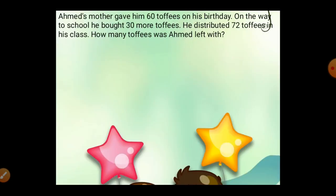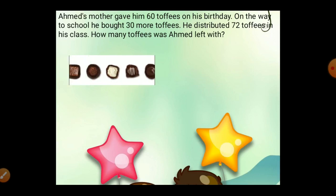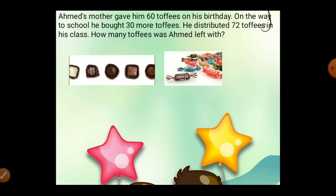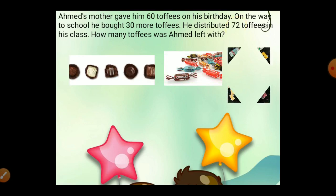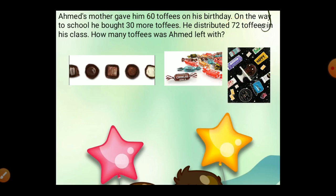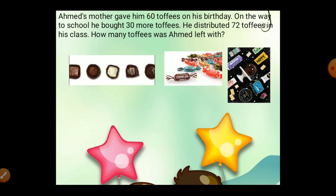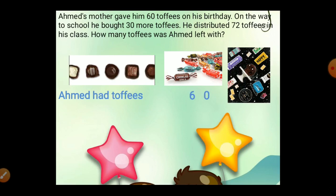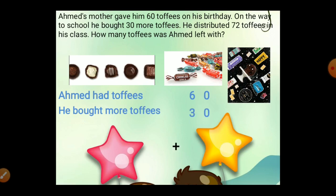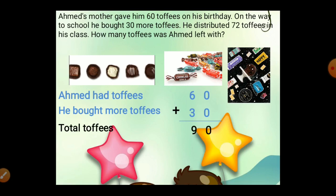Ahmed's mother gave him 60 toffees on his birthday. On the way to school he bought 30 more toffees. He distributed 72 toffees in his class. How many toffees was Ahmed left with? For finding total toffees, first you have to do addition, then subtraction. Ahmed had 60 toffees and he bought 30 more. Total: 0 plus 0 is 0, 6 plus 3 is 9. Total 90 toffees.